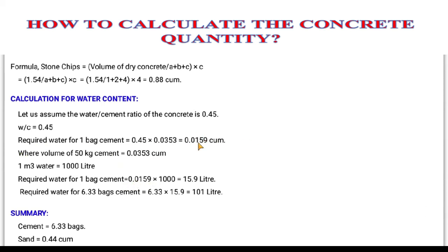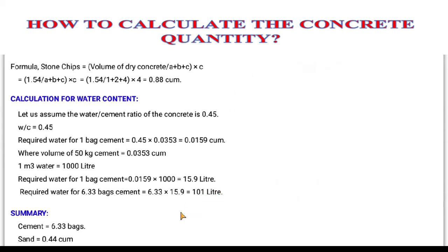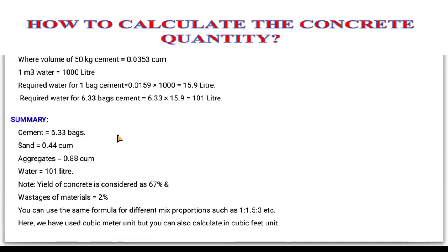To convert water volume to liters: 0.0159 cubic meters × 1000 = 15.9 liters per bag of cement. Since we need 6.33 bags for 1.54 cubic meters of dry concrete, the total water required is 6.33 × 15.9 ≈ 101 liters. On the calculator: 6.33 × 15.9 gives approximately 101 liters.